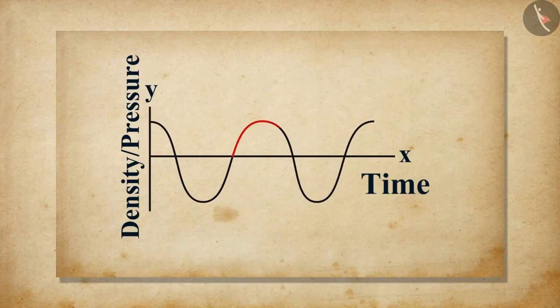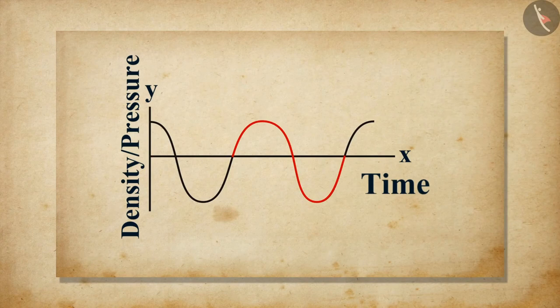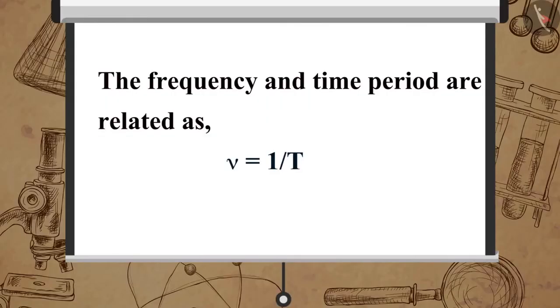The time taken by one complete oscillation is the time period of the sound wave, which is denoted by T. The frequency and time period are related as, nu is equal to 1 by T.